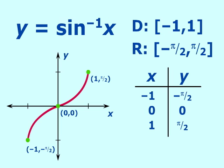And again, this graph is always increasing, but it only increases between the negative 1 and 1 and negative pi over 2 and pi over 2. And that's what you have to remember when you are graphing your arc sine function.